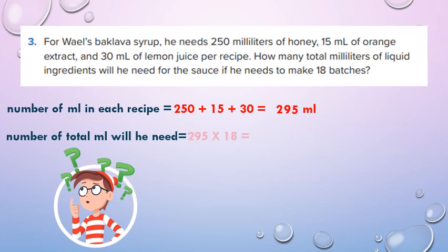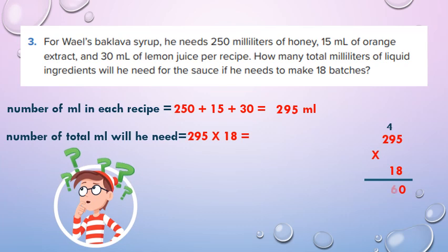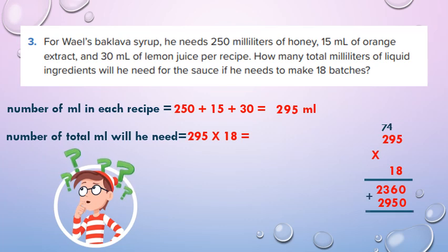The total number of ml he will need: we multiply 295 by 18. In draft: 8 by 5 equals 40, put 0 carry 4. 8 by 9 equals 72 plus 4 equals 76. 8 by 2 equals 16 plus 7 equals 23. Put 0 first, then multiply 1 by 295, put 295. Add the 2 products: 0 plus 0 equals 0, 9 plus 6 plus 5 equals 11, carry 1. 1 plus 3 plus 9 equals 14, carry 1. 1 plus 2 plus 2 equals 5. So the total ml: 5,310 ml.